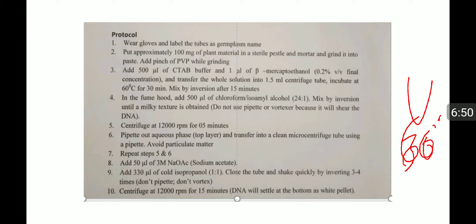After that, pipette out the aqueous phase and transfer to a clean centrifuge tube using a pipette. Avoid particulate matter. Repeat steps 5 and 6. Add 50 microliters of 3M sodium acetate and 300 microliters of cold isopropanol. Close the tube and shake quickly by inverting 3 to 4 times.